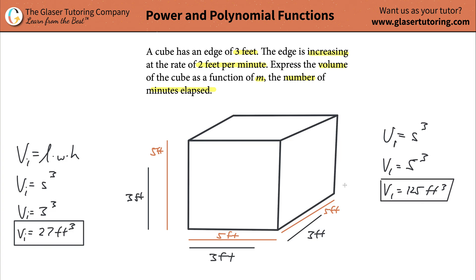What happens in the next minute? After two minutes elapse, I add another two, so it's going to be seven. I plug seven into the formula: seven cubed works out to be 343 cubic feet.